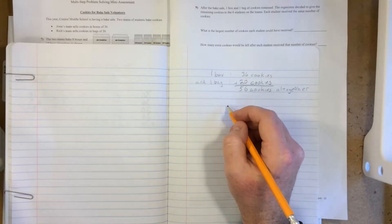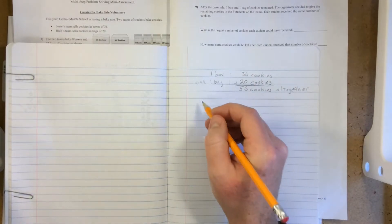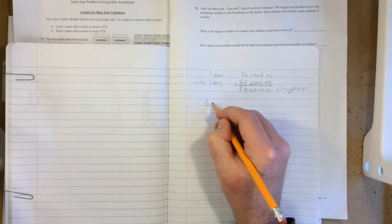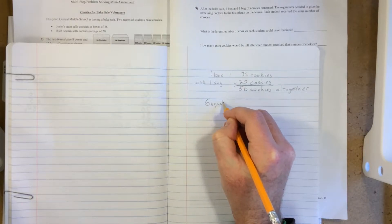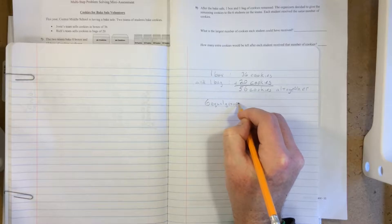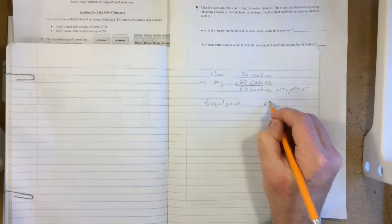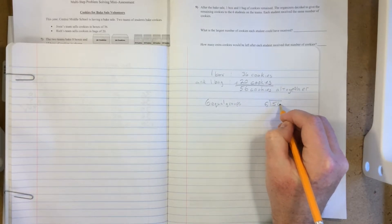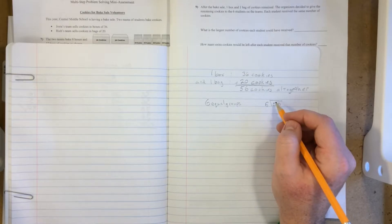Now we need to divide these evenly into six groups for the six students. So we're going to use division and have 56 divided by 6. And when we look at that, 6 doesn't divide into 56 evenly, but we can still do this using a remainder.